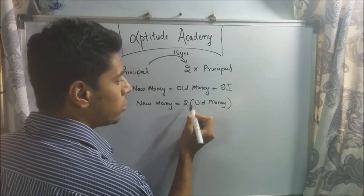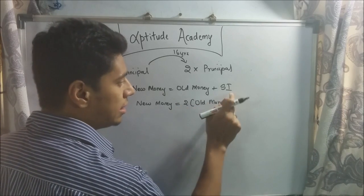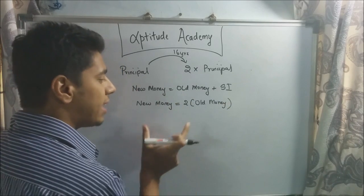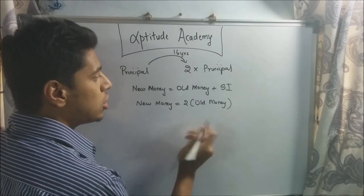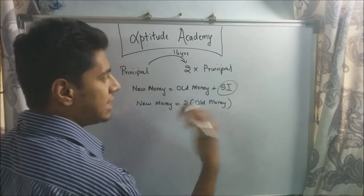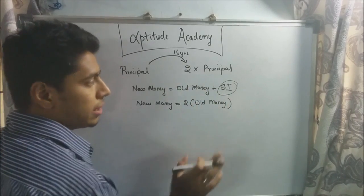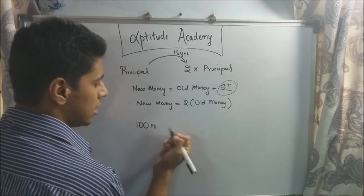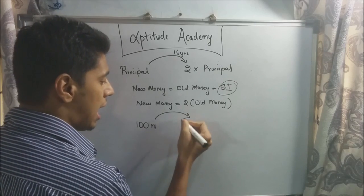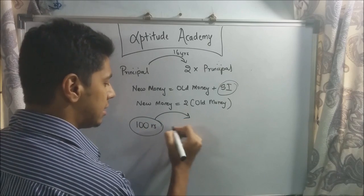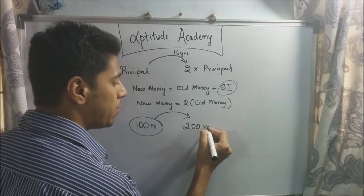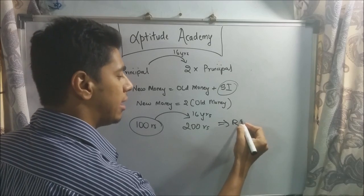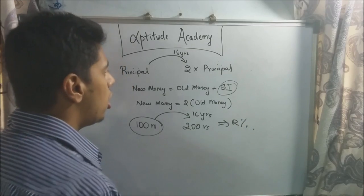Now, for this to be equal to twice the old money, this should also be the old money. So basically, what they're saying is, after 16 years, what is the rate of interest you should have so that your simple interest after 16 years will be equal to your principal? So if I put in 100 rupees, and after 16 years, I want double this—200 rupees—what should be my rate of interest?